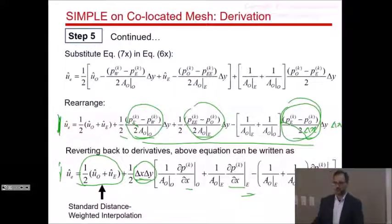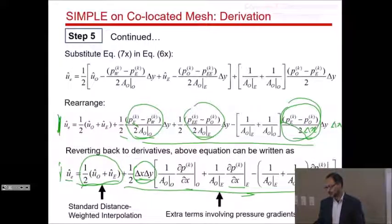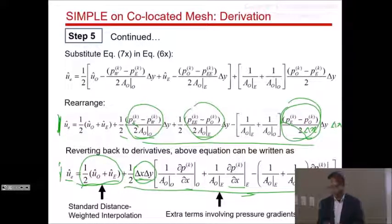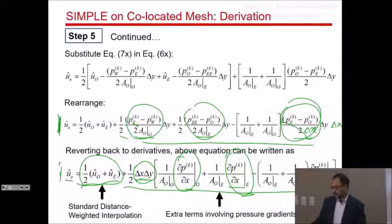The resulting PUIM formula shows that the first term is the standard distance-weighted interpolation (U_0 + U_E)/2, but there are additional terms depending on pressure gradients. That's why it's called the pressure-weighted interpolation method. The face velocity doesn't depend only on the two adjacent cell center velocities but also on the pressure gradients at nodes 0, E, and at the face itself.